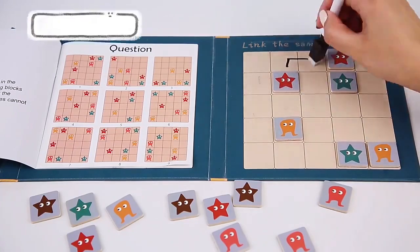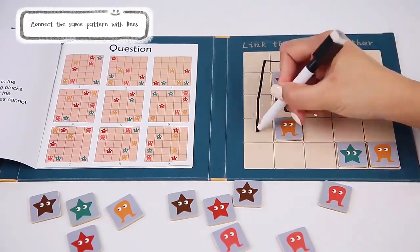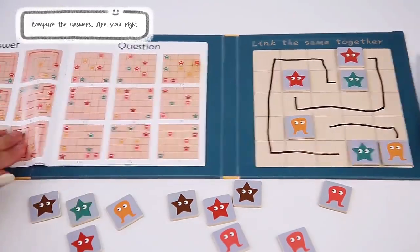Place the magnet in the box, connect the same pattern with lines, fill in the blanks, compare the answers.